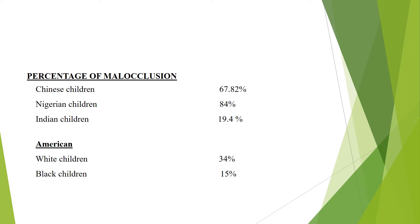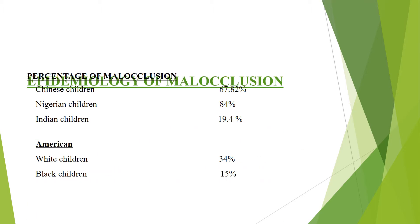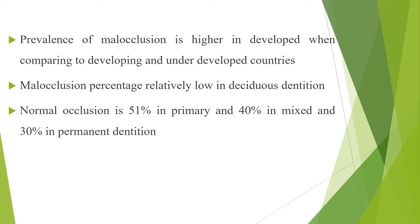Looking at the percentage of malocclusion among different populations: Chinese children have 67.82%, Nigerian children 84% — so malocclusion is more prevalent among Nigerian children. Indians have approximately 20%, American whites 34%, and Black Americans 15%. The prevalence of malocclusion is higher in developed countries compared to developing and underdeveloped countries. Malocclusion percentage is relatively low in deciduous dentition.